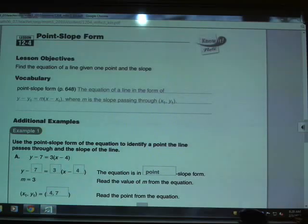So what is Point Slope Form? That's the equation of a line in the form y minus y sub 1 equals m times x minus x sub 1, where m is the slope passing through the point (x1, y1).